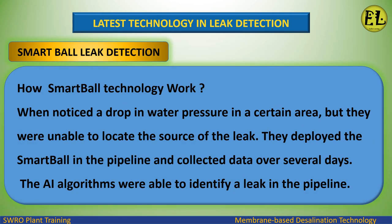In a working example, when a drop in water pressure was noticed in a certain area but the source of the leak could not be located, the smart ball was deployed in the pipeline and data was collected over several days. The AI algorithms were then able to identify the leak in the pipeline.